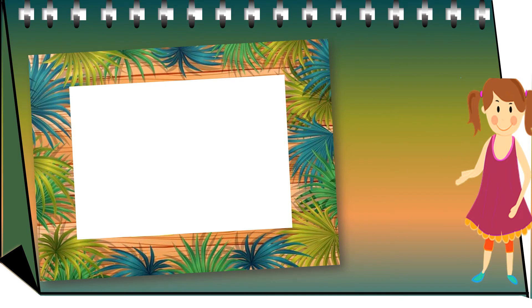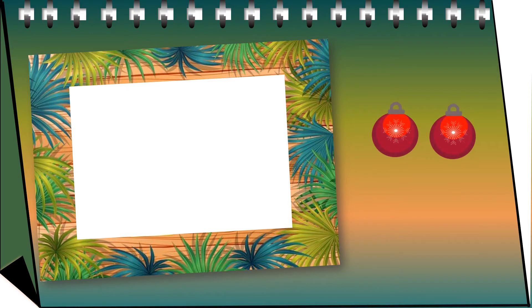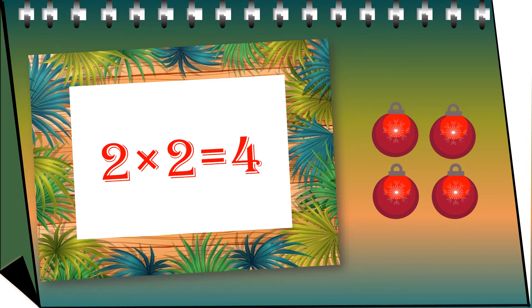Let's understand the table of two by taking these balls. Now you have two balls with you. When you add two more balls to it, it becomes four. That means you can write it as two twos are four — you are adding two, two times.